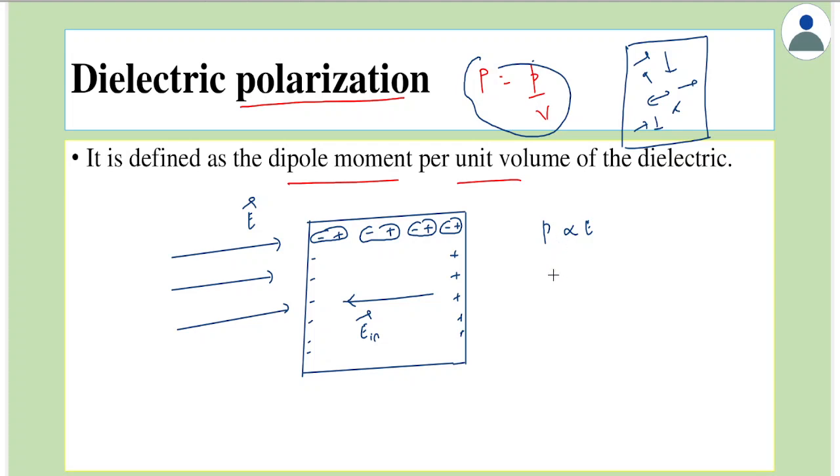Now we bring a constant here called chi. So this constant is called chi e. This chi stands for electrical susceptibility.